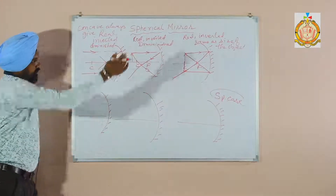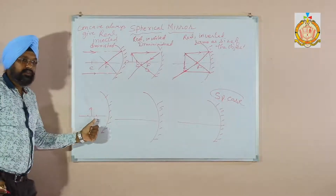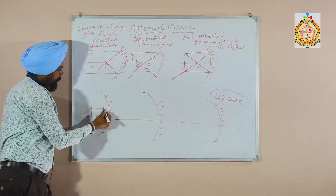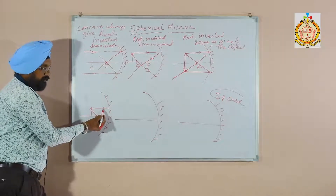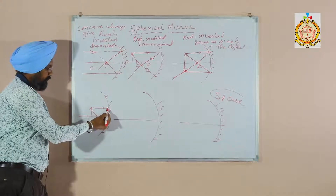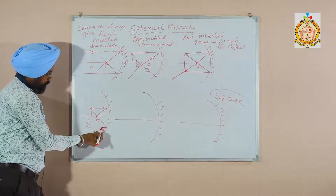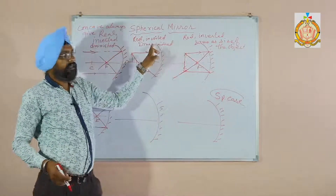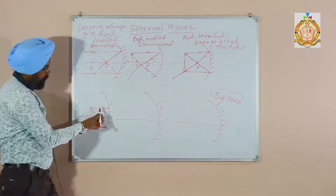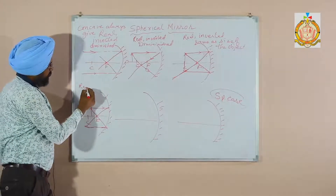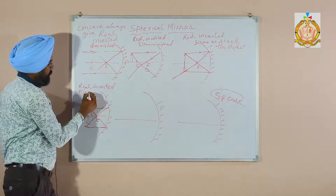The fourth case: the object is between the center of curvature and the focus point. One ray is parallel to the principal axis, and another passes through the focus point. The ray parallel to the principal axis comes to the focus point after reflection, and the other ray goes back parallel. In this case the image will not be diminished — it will be magnified. Characteristics: real, inverted, and magnified.